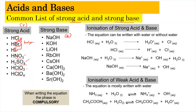For strong bases, there are eight in total, and they include Group 1 and Group 2 elements. Any acid not on this list — for example, CH₃CH₂CH₂COOH — is automatically a weak acid if it is not inside the list.